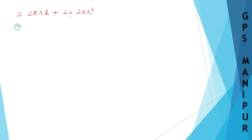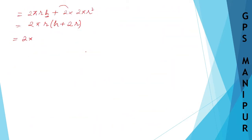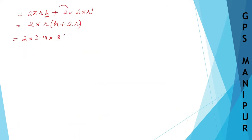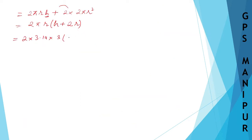Taking 2, π, and R common: what is left from the cylinder part is H, and from the hemisphere part, 2 into R remains. The question says to take π equal to 3.14. So we have 2 into 3.14 into R, which is 3, into H, which is 16, plus 2 into R, which is 3.